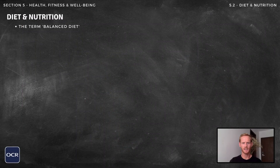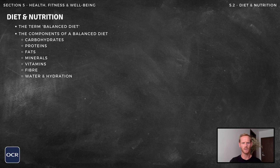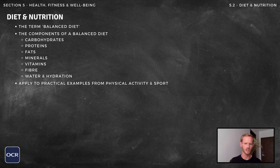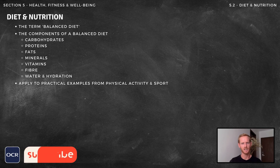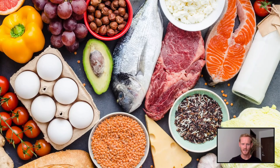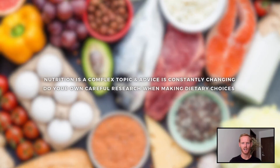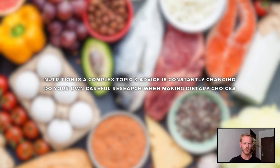For topic 5.2 you need to know a definition of the term balanced diet, the nutritional components of a balanced diet, and to understand the effect of diet and hydration on energy use in physical activity. A quick disclaimer: this video is certainly not dietary advice — I'm simply covering what's included in the OCR syllabus so that you can score marks on exam questions.